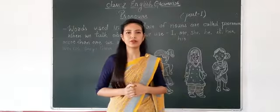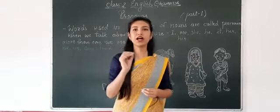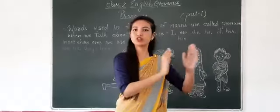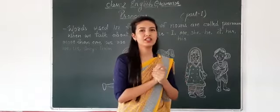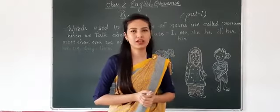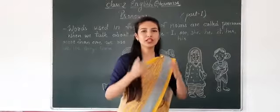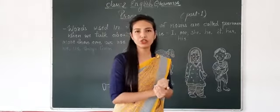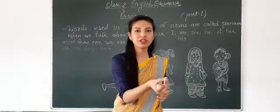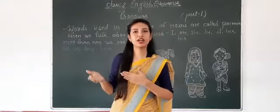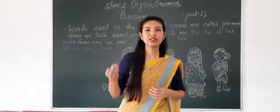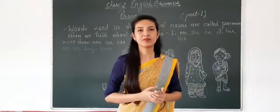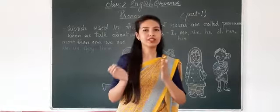I will give you one example. Suppose: Anun is a girl. Anun is a good girl. If we keep repeating 'Anun, Anun' again and again, that is not ideal. So instead of repeating the name, we use an English pronoun in place of 'Anun.' We will write 'she.' She is a pronoun used in the place of a noun.